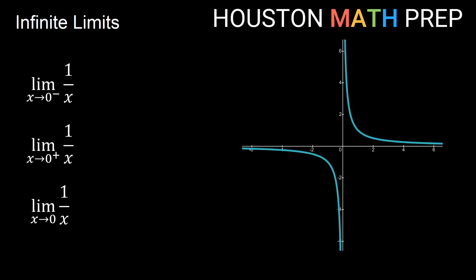Let's take a look at some examples. Here I have the graph of y equals 1 over x. I want to look at the limit as x approaches 0 from the negative side of 1 over x. As I approach 0, which is the y-axis, from the negative side, I'll be on this branch down here in quadrant 3. You can see that branch is going negative without bound, so this first limit is negative infinity.